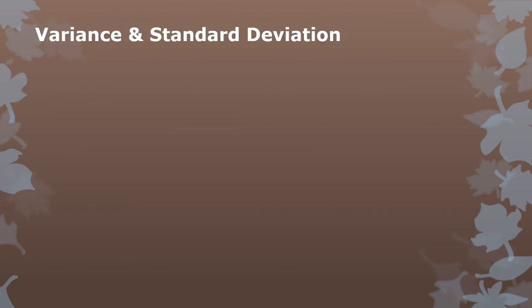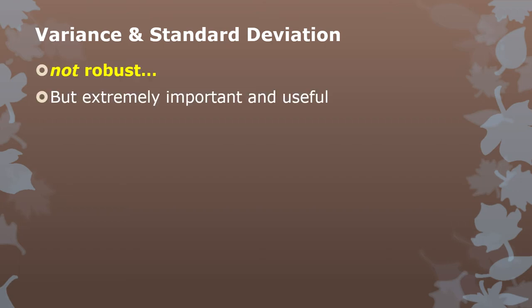These two measures are not robust — they're like the mean, they're based on the mean in fact. But they are extremely important and useful, so we spend a lot of time trying to collect data that are bell-shaped and normal in a histogram, without extreme outliers or too much skew, because if we can use variance and standard deviation, we have huge advantages for inferential statistics and hypothesis testing.